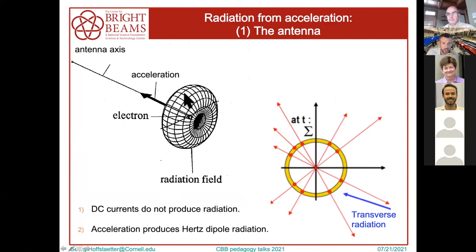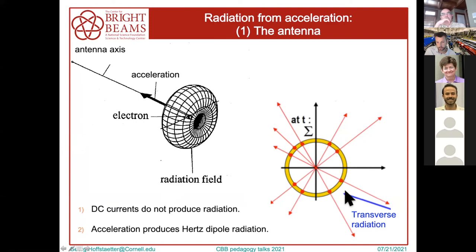You do need acceleration of charges to get this radiation pattern. When you have it, just from symmetry reasons, in all directions in the azimuth of this donut, the same amount of photons per angle get radiated, characterized by this shell of photons that emanates outward.